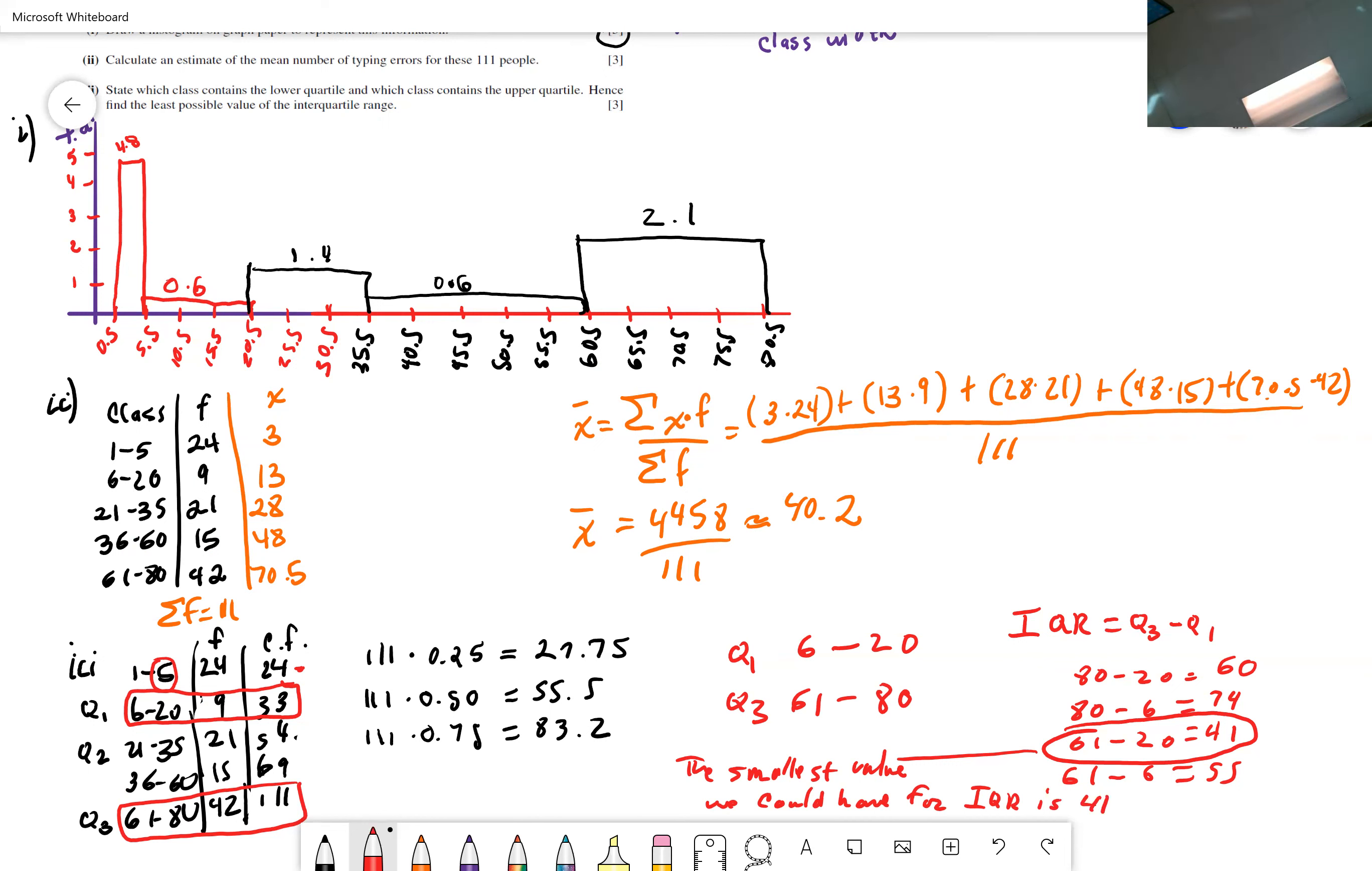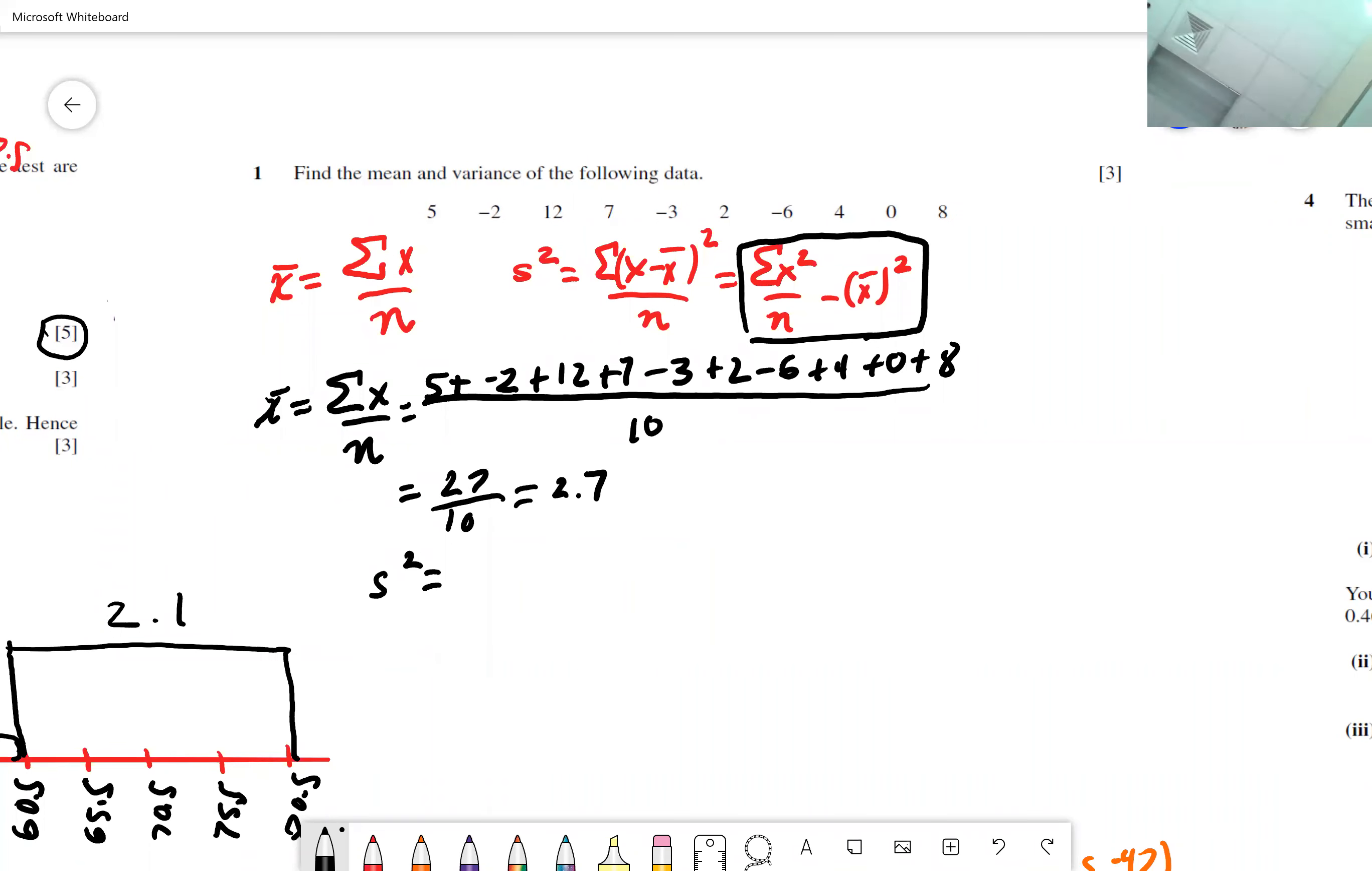So which one's the smallest value? This comes out to 60. 80 minus 20 is 60. 80 minus 6 is 74. 61 minus 20 is 41. And 61 minus 6 is 55. So what is the smallest value we could have had in our interquartile range? The smallest value we could have for IQR is 41. Does that make sense?